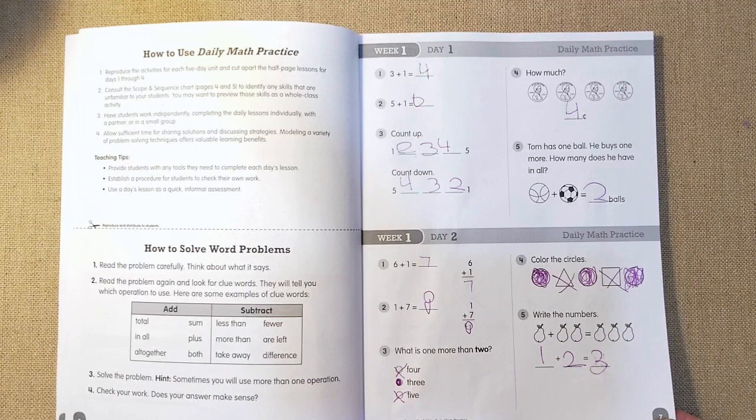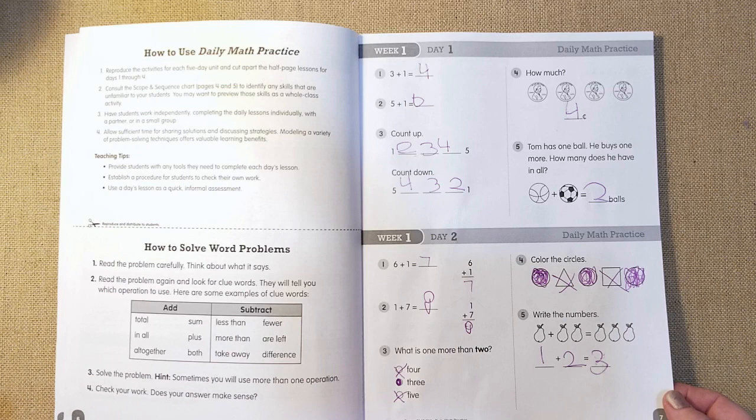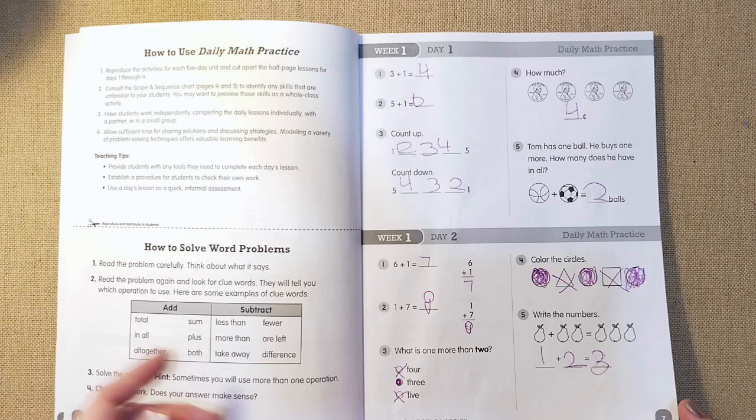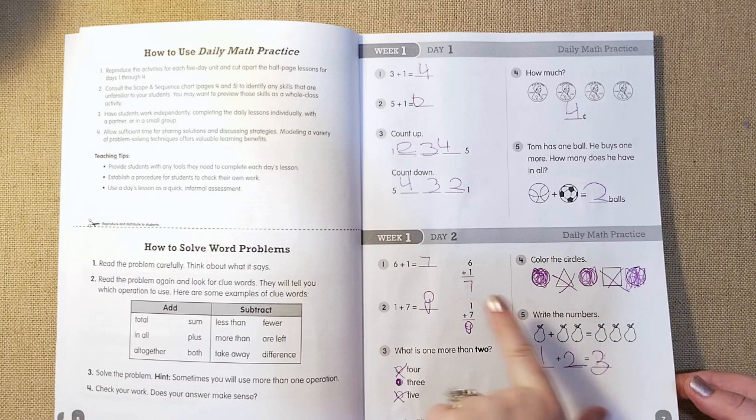And then I like this because they have to bubble in the answer and read the questions. So what is one more than two? And so she bubbled in three. It was really funny because she's like, what do I do? She's never done like the tests that we've done at school before that I grew up doing, which were like, not my favorite tests to do whatsoever.